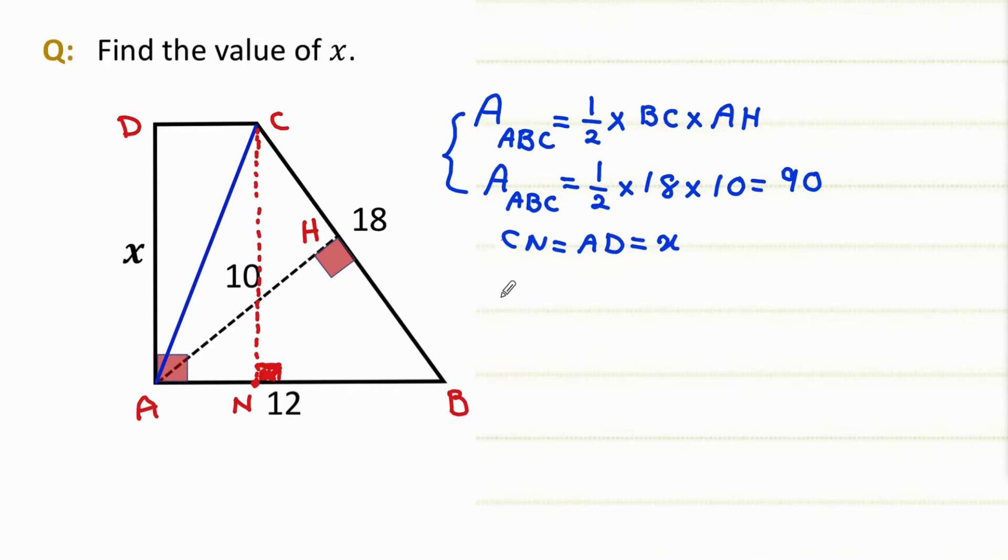That's why the area for the triangle A, B, and C is 1 over 2 times base, which is AB times height. That is CN. But CN is x.